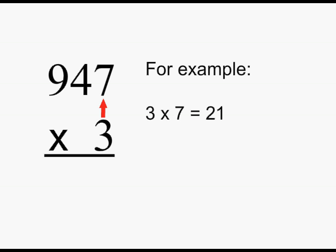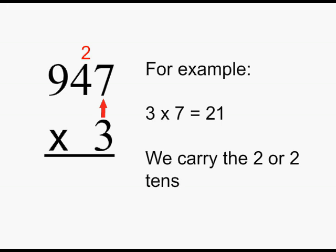For example, 3 times 7 is 21. We carry the 2, or two tens, and put down the 1.